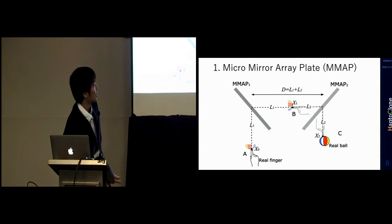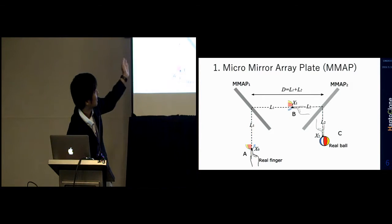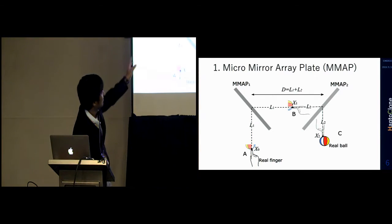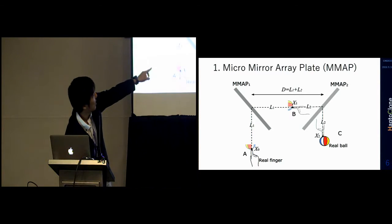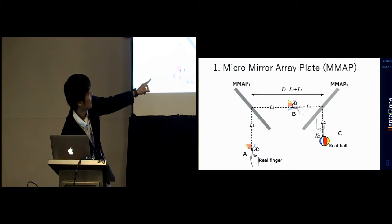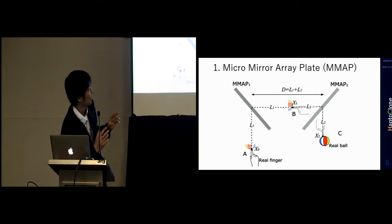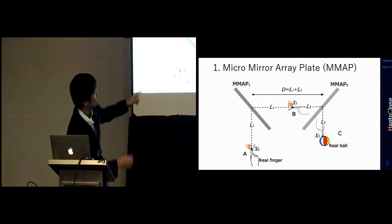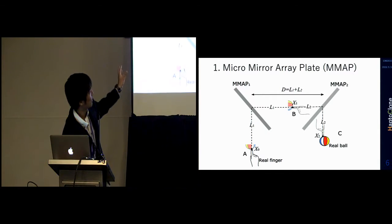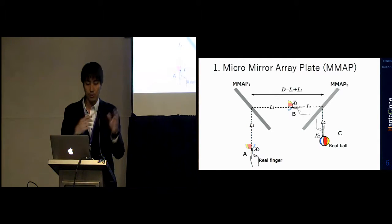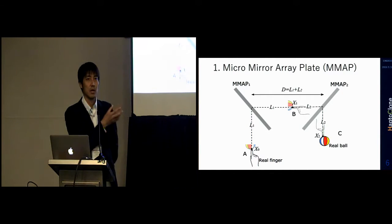To reduce this effect, we use two micromirror array plates. If we arrange them such that when you put your hand inside the workspace, its copied image appears at position B, it flips the image again. So the people viewing at position C can see the original 3D floating image. This plate is a two-way plate, so if you put a real ball on the other side, people can see its reconstructed image at the other side. This is the first technology we use to copy the real object as a floating 3D image.